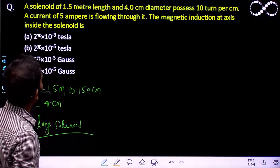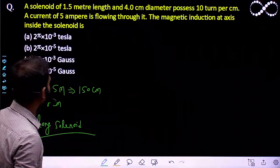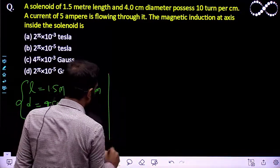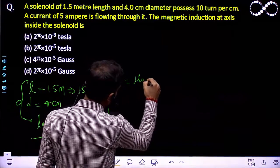The current is given 5 ampere. The magnetic induction at the axis inside the solenoid - in the case of long solenoid magnetic field formula is B equals μ₀ N into I.